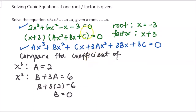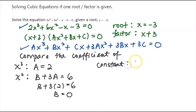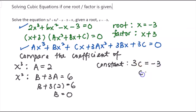Lastly, I need to find the value of c. You can either compare the coefficient of x or compare the constant. I choose to compare the constant. The constant from the expanded equation is 3c, and the constant from the original equation is negative 3. So c equals negative 1.